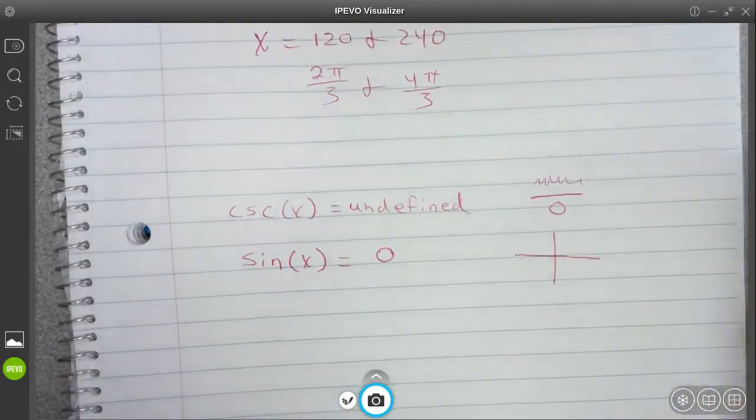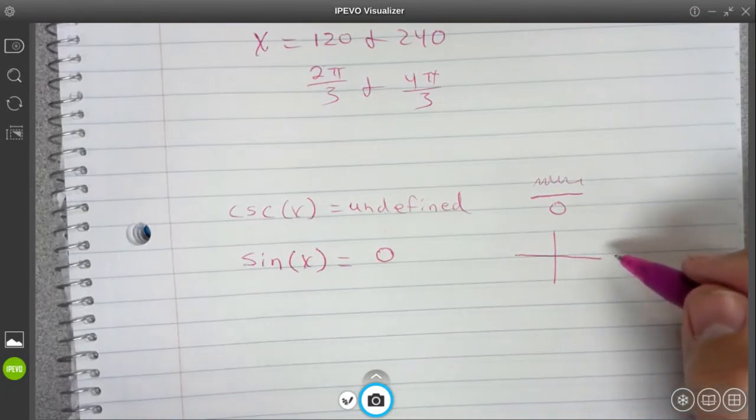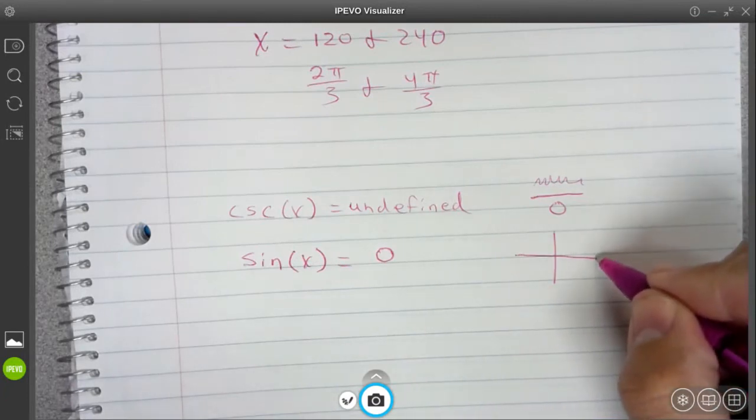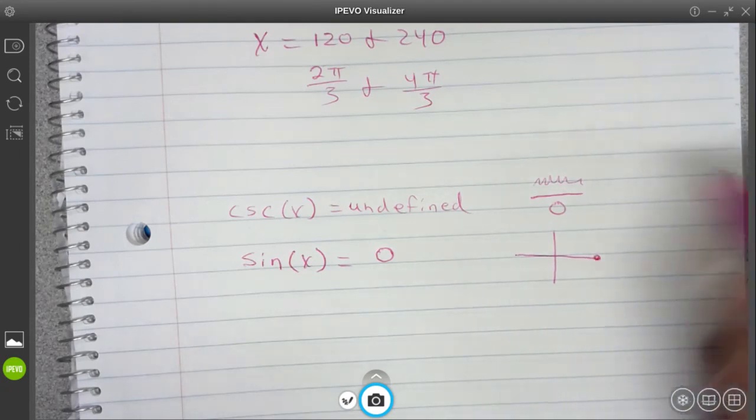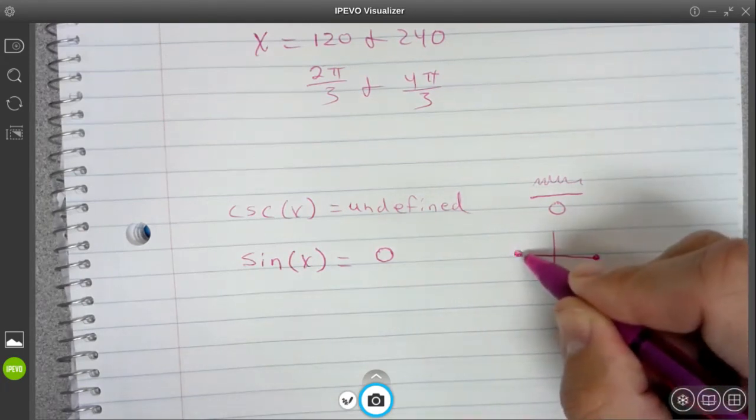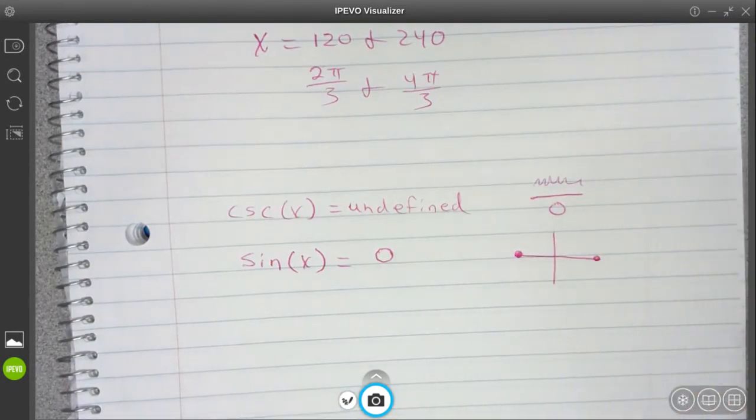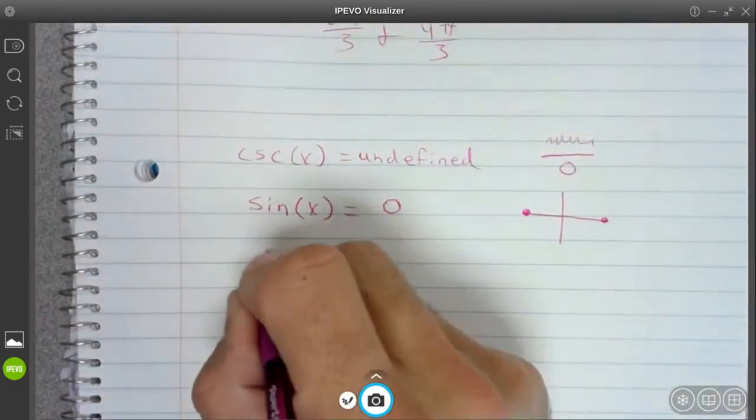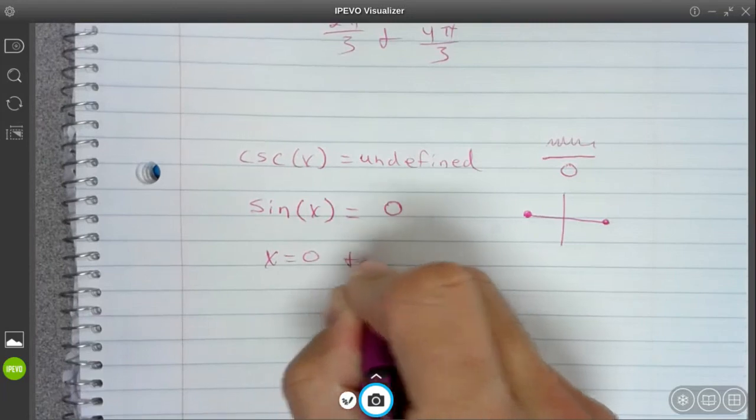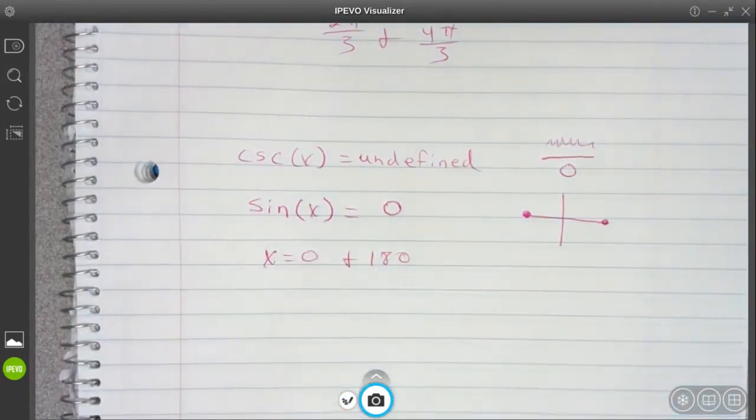That's going to happen at two different places. Two different places from 0 to 2π where the y value is 0. It's going to happen at 0, and it's also going to happen over here at π, or 180 degrees. So those are it, 0 and 180.